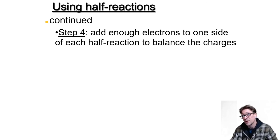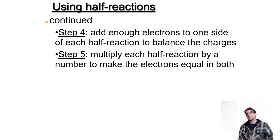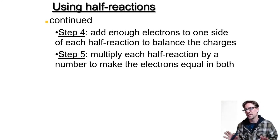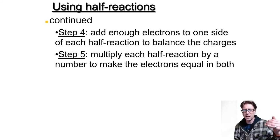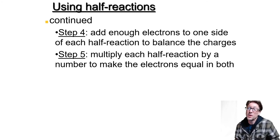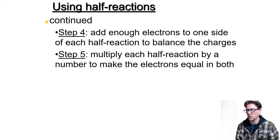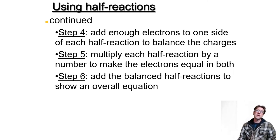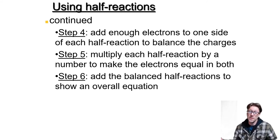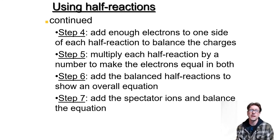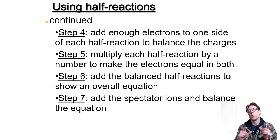Electrons are produced in oxidation and consumed in reduction. Step five, multiply each half-reaction by a number to make the electrons equal in both — for example, if oxidation produces four electrons and reduction consumes two, multiply the reduction half-reaction by two. Step six, add the balanced half-reactions together to get the overall equation. Then add spectator ions and confirm everything is balanced.